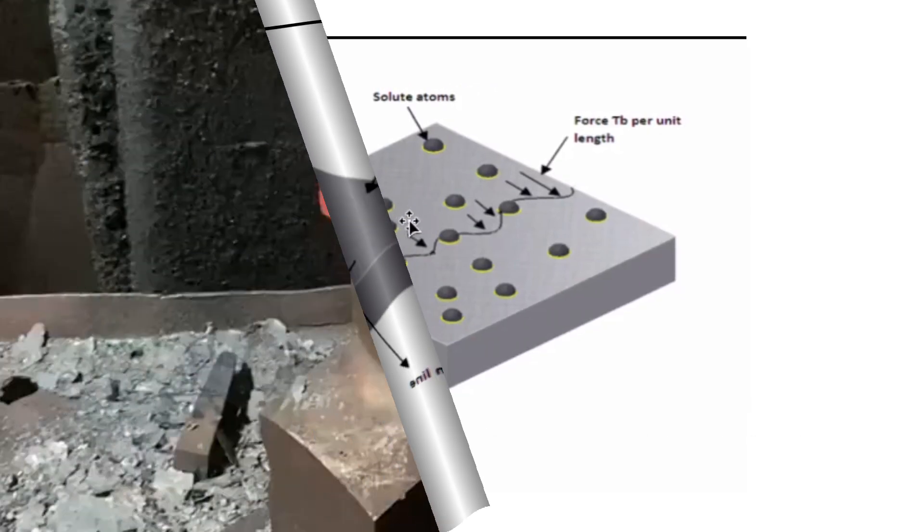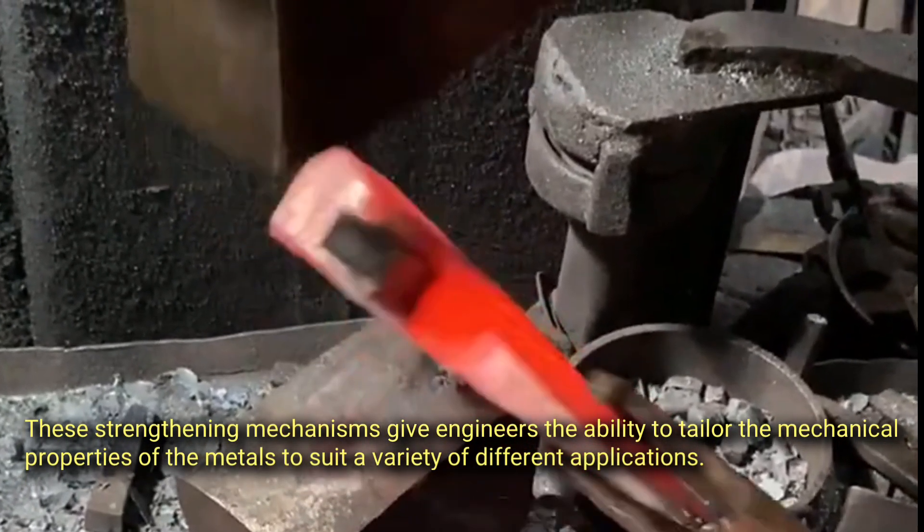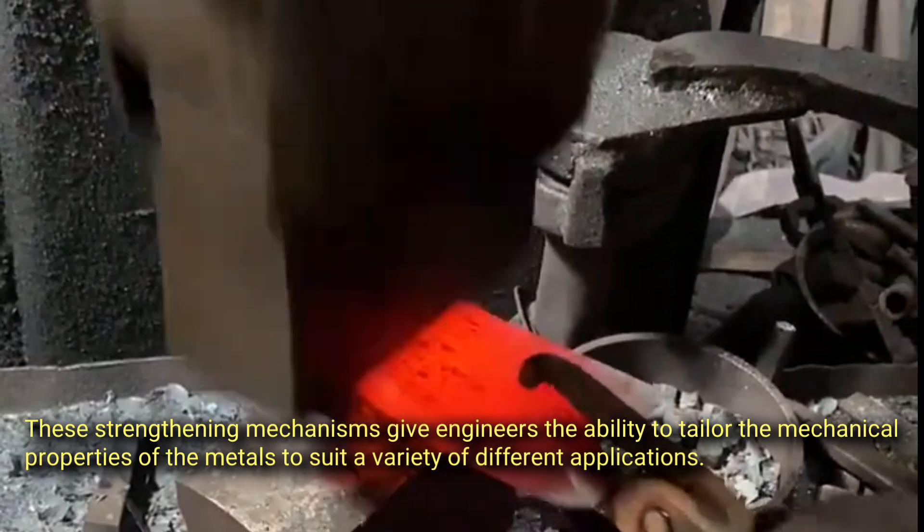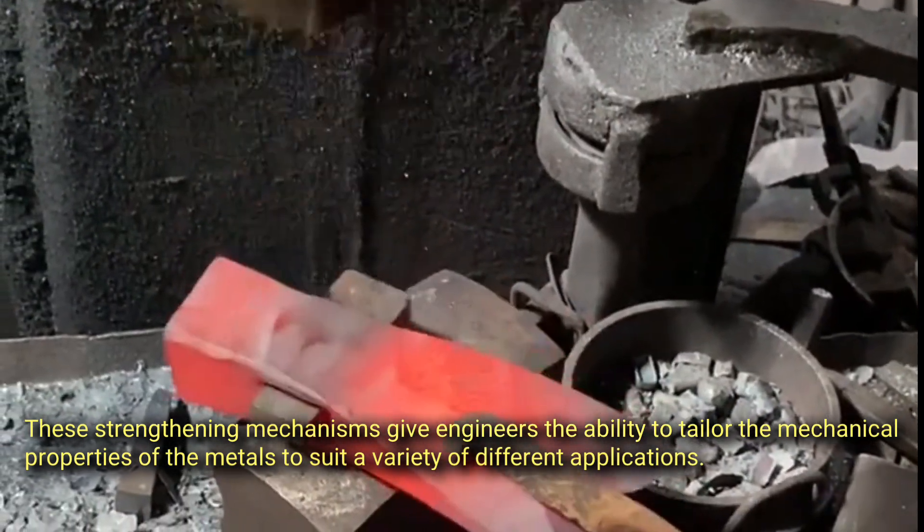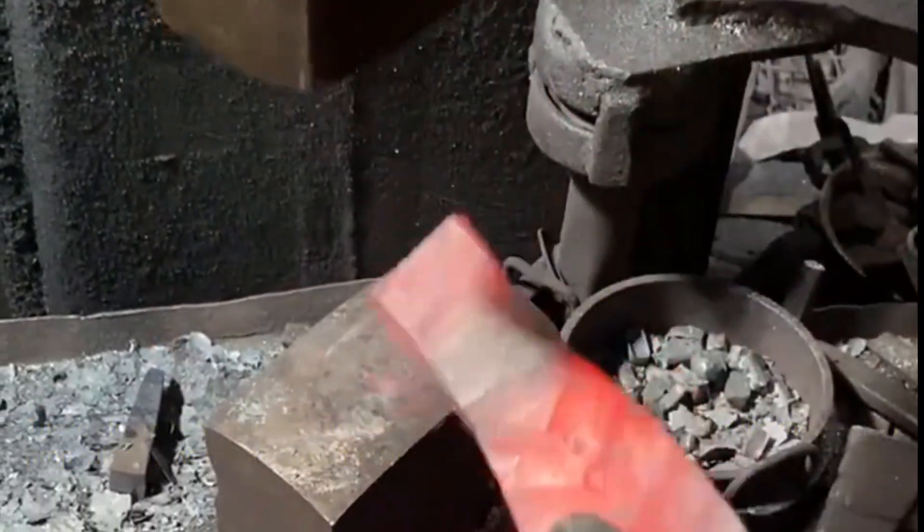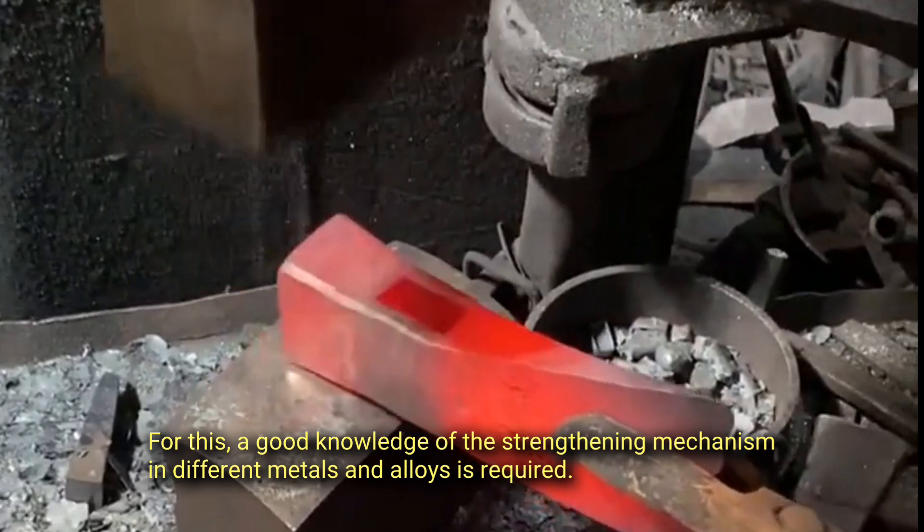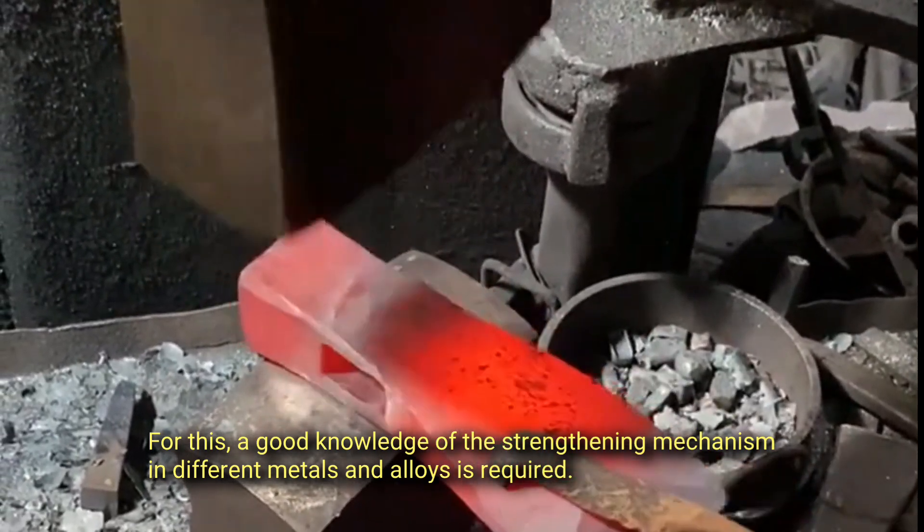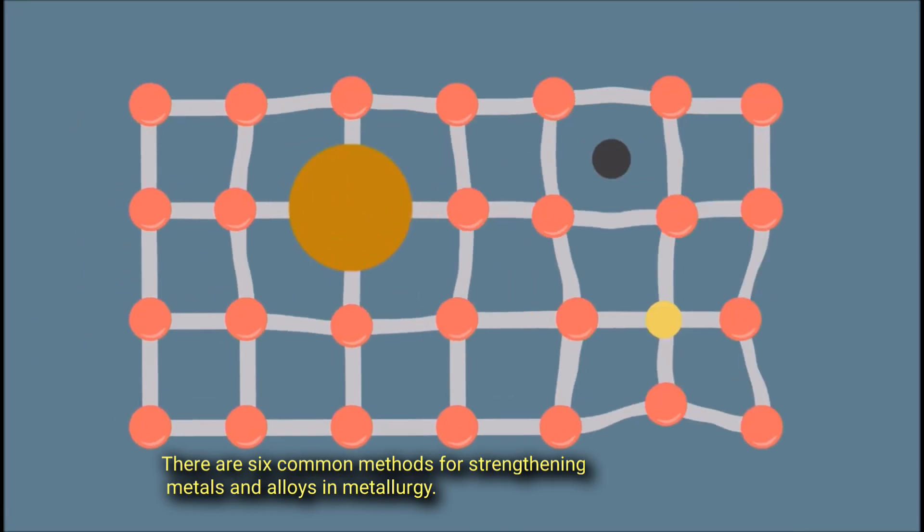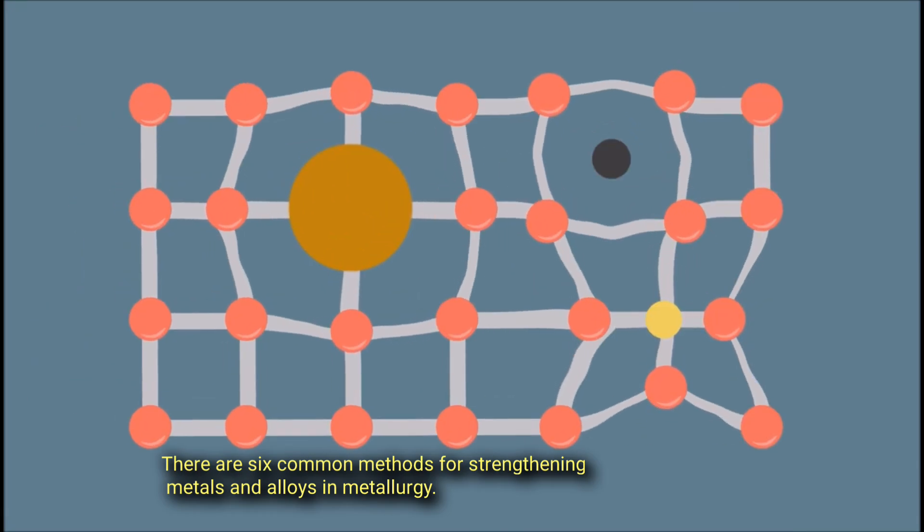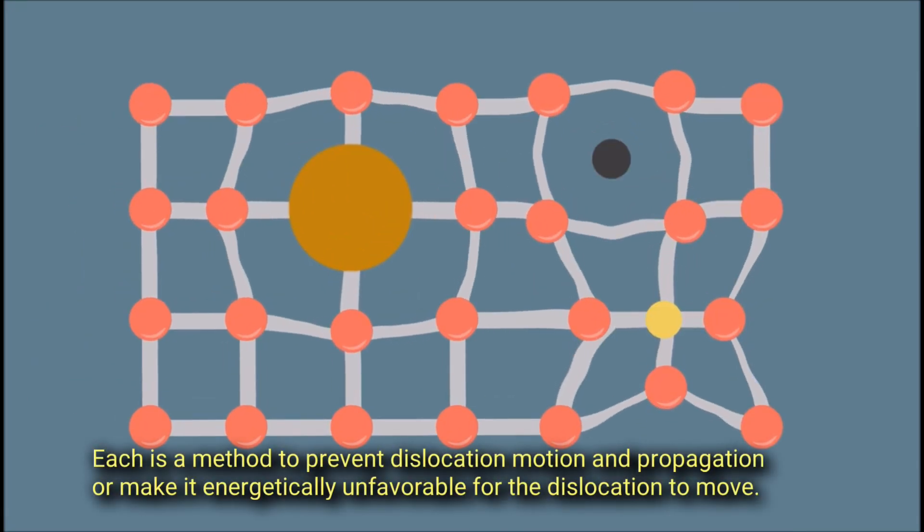These strengthening mechanisms give engineers the ability to tailor the mechanical properties of the metal to suit a variety of different applications. For this, a good knowledge of the strengthening mechanism in different metals and alloys is required. There are six common methods for strengthening metals and alloys in metallurgy. Each is a method to prevent dislocation motion and propagation or make it energetically unfavorable for the dislocation to move.